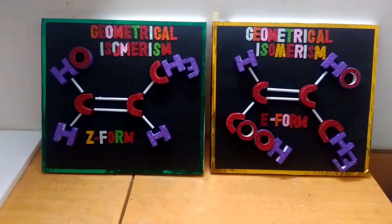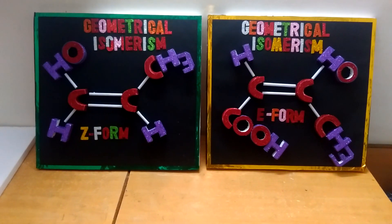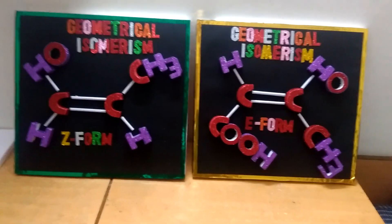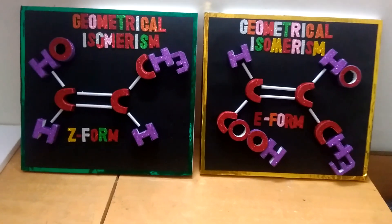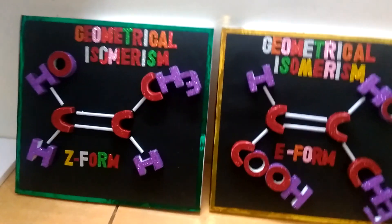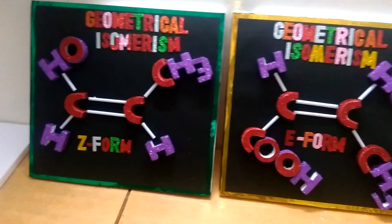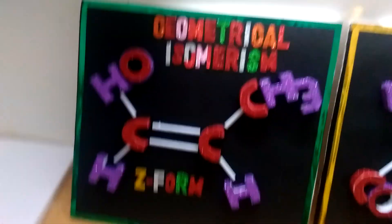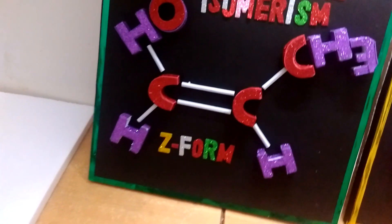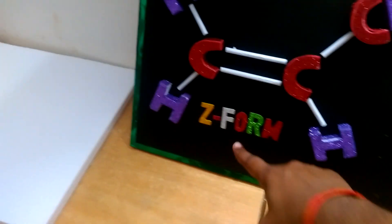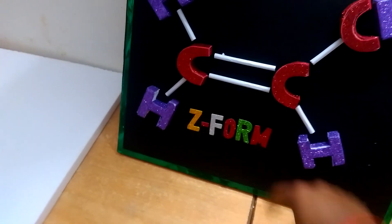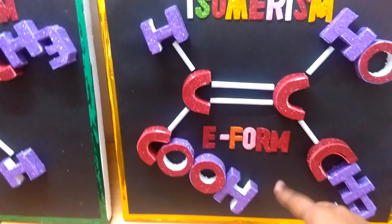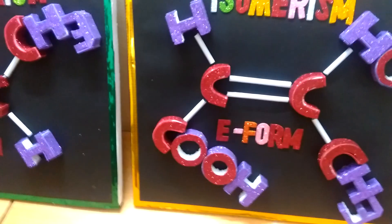Hello everyone, this is a model of geometrical isomerism and it is a part of isomerism. Geometrical isomerism is categorized into two parts: the first is cis form, which is also known as Z form, and the other is E form, which is known as trans form.